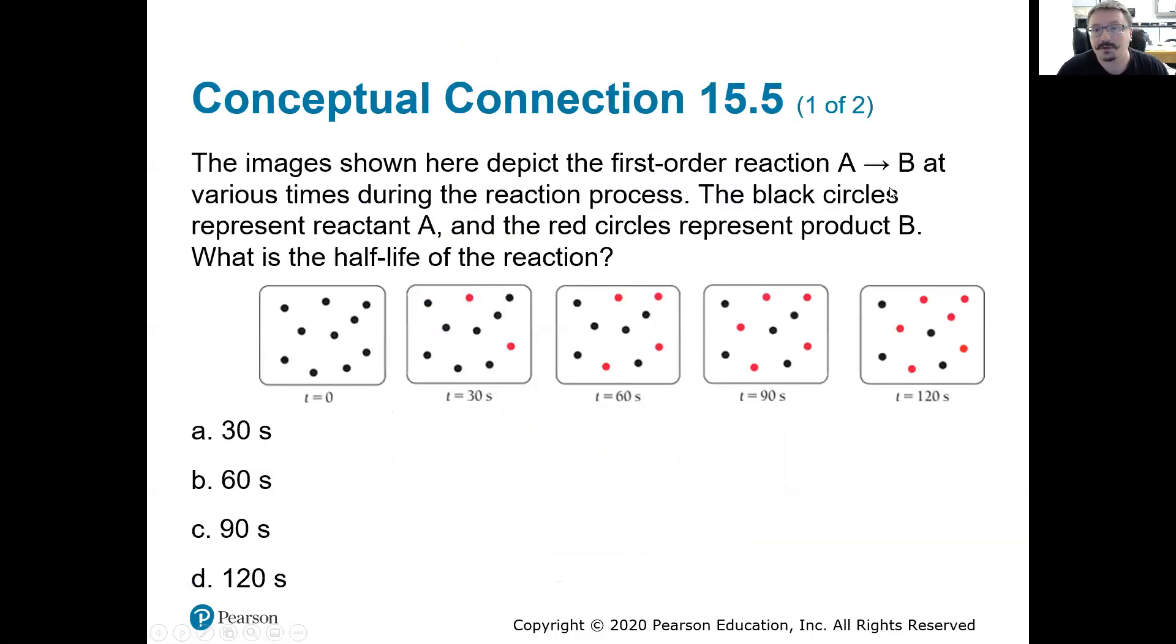So the images shown here depict the first product reaction A to B at various times. The black circles represent reactant A. The red circles represent product B. What is the half-life? So if we count all these, one, two, three, four, five, six, seven, eight, nine, ten, looks like we have 10. So the half-life would be where we've lost half of those, and we've gone to five. One, two, three, four, five. Looks like the 90 seconds time is where we have half of our original quantity of reactant A. And yep, there it is, 90 seconds right there.